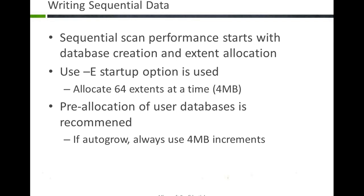There are a few switches to turn on — this is not always a rule, it's a sometimes rule for a data warehouse load. The dash-E switch will give you some advantages: it gets 64 extents at one time as files grow — four megs at a time. That four megabytes is optimized for 64-bit architecture — Intel and AMD chips can read data in four-megabyte increments much more efficiently. You also want to pre-aggregate your data. If autogrow is turned on, you want to grow those files in four-megabyte increments so everything lines up.